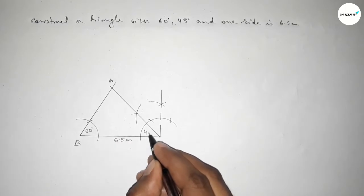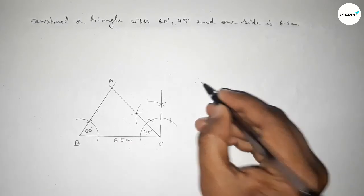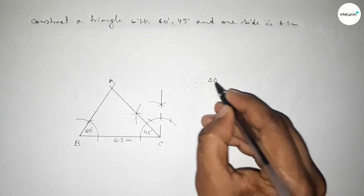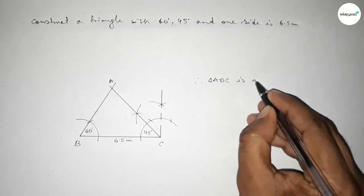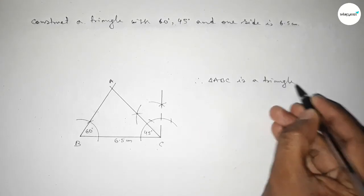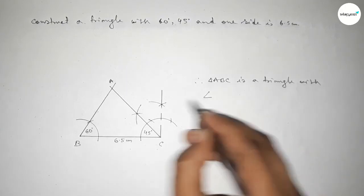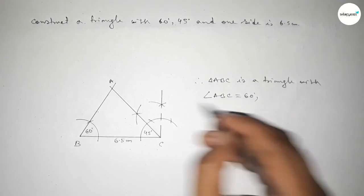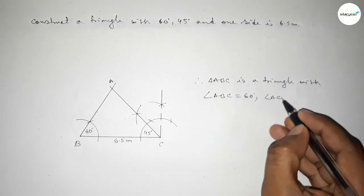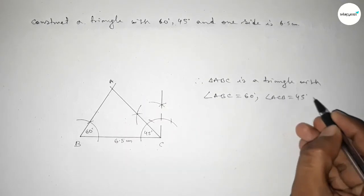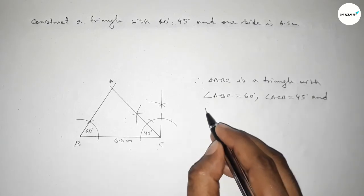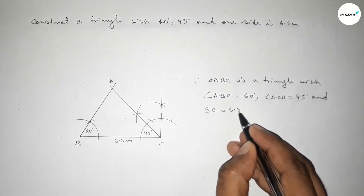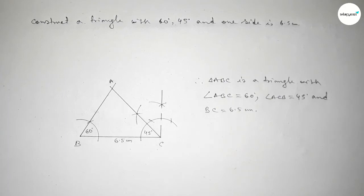Therefore, triangle ABC is constructed with the given conditions: angle ABC equals 60 degrees, angle ACB equals 45 degrees, and given side BC equals 6.5 centimeters. That's all — thanks for watching. If this video is helpful to you, please share.